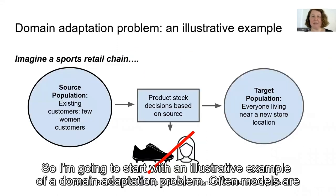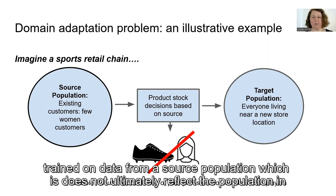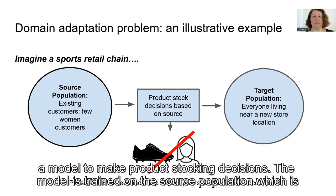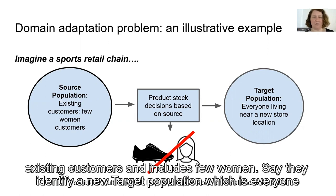I'm going to start with an illustrative example of a domain adaptation problem. Often models are trained on data from a source population, which does not ultimately reflect the population in which it is deployed. This is the target population. Take, for example, a sports retail store which uses a model to make product stocking decisions. The model is trained on the source population, which is existing customers and includes few women.